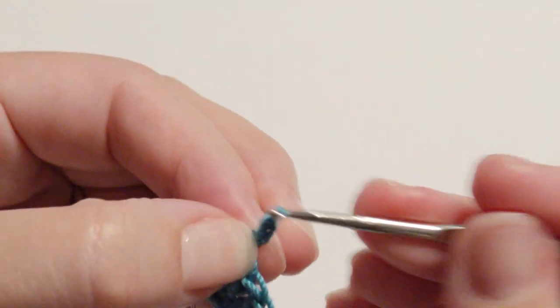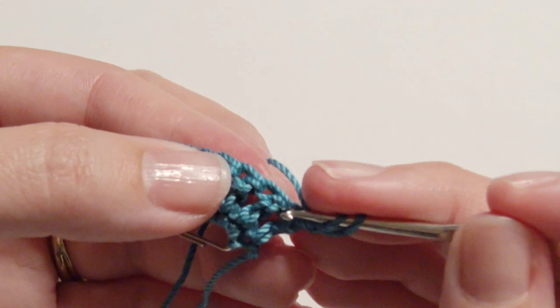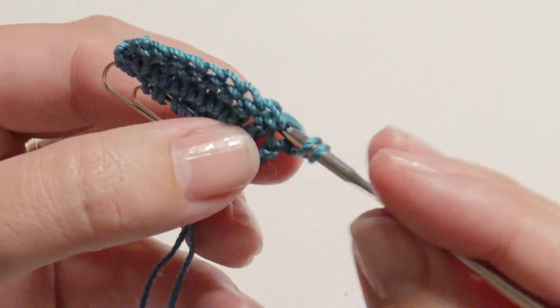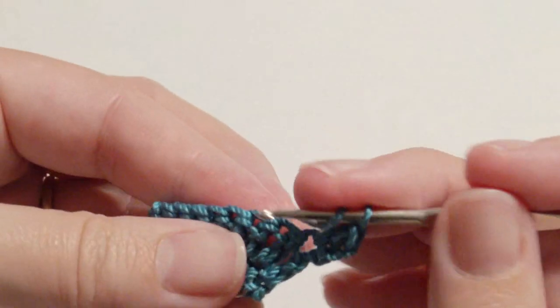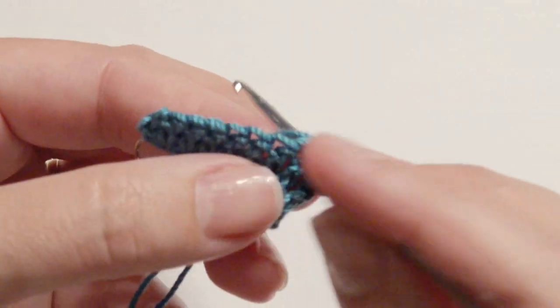Chain two and turn and work one double crochet in the next five stitches. You can work it right in the same stitch as the chain two. And then in the next four stitches work a double crochet.